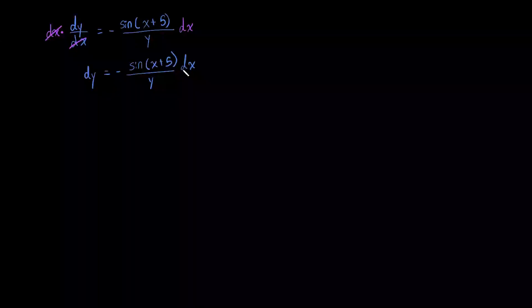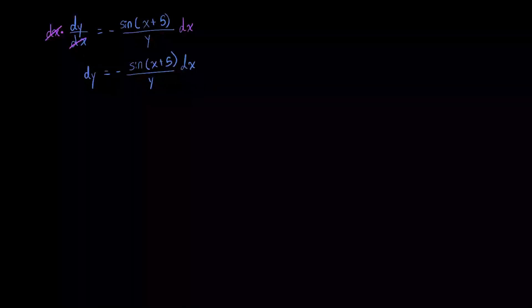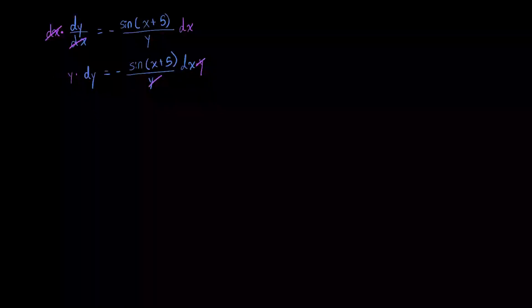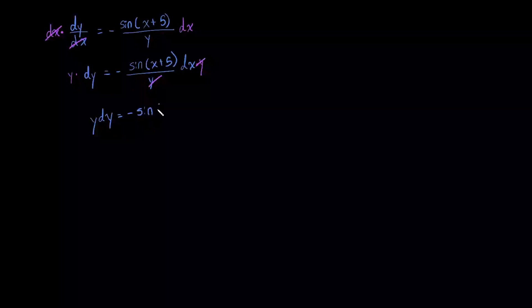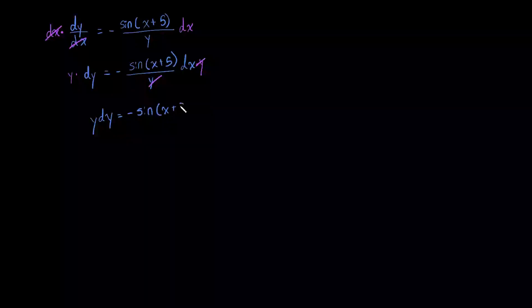Now what we can do is multiply both sides by y. This y and this y simplify to 1, and we're left with y dy is equal to negative sine of x plus 5 dx.